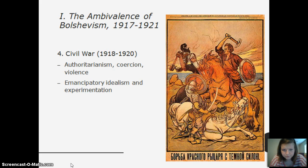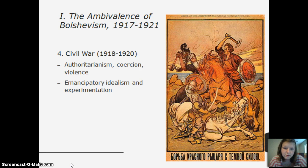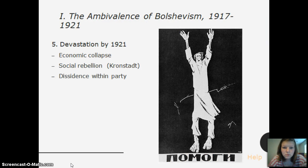Then there was civil war, with coercion, violence, authoritarianism, and emancipatory idealism and experimentation. By 1921 there was devastation — economic collapse, social rebellion, and dissidents within the party.